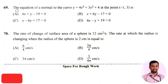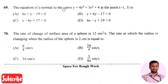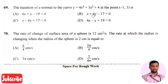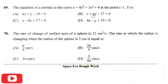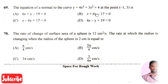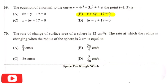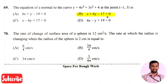The next question: the equation for a normal to the curve y equals 4x cubed plus 3x squared plus 4 at the point (1, 11) is? The right answer is option 2, that is x plus 6y minus 17 equals 0.